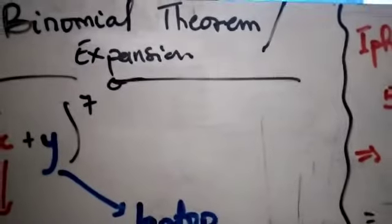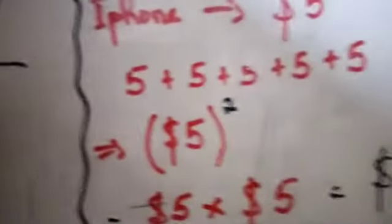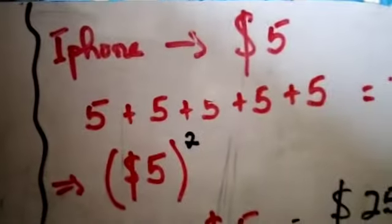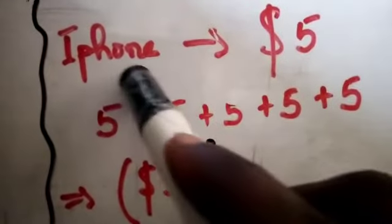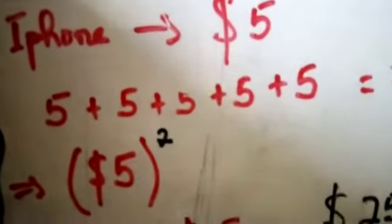Before we get a better understanding of binomial theorem or expansion, let's understand this simple concept. Now assuming you want to buy an iPhone that costs $5, this is just an assumption, and you want to buy five pieces of that iPhone.